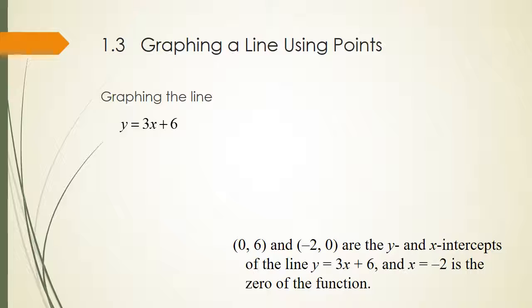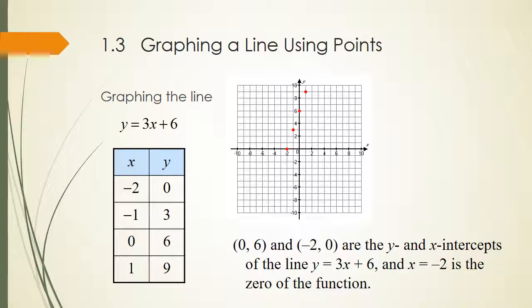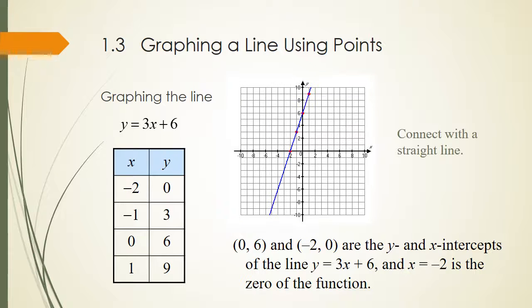We're going to graph the line y equals 3x plus 6. On the left, we have an x-y chart. We picked values for x: negative 2, negative 1, 0, and 1, and solved for y. We got 0, 3, 6, and 9. Then we put those points on the graph, connected the points, and you have the line.